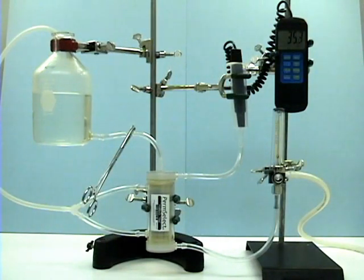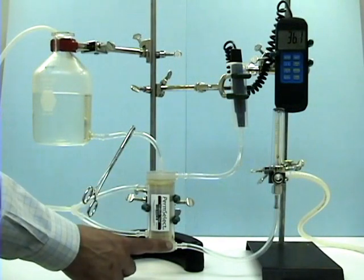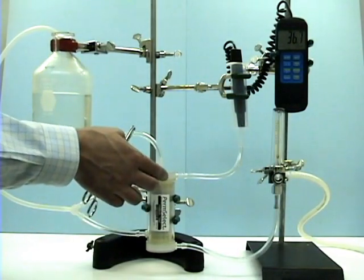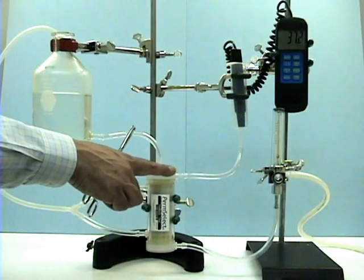This module is connected so that an air stream flows through the lumen of the hollow fibers and water fills the shell side. Dry air enters at this port shown here, flows through the lumen of the hollow fibers and exits at this port shown here.